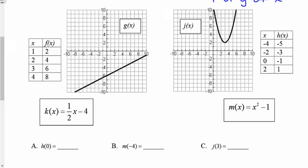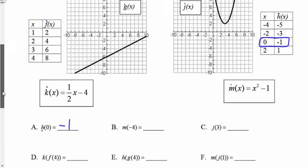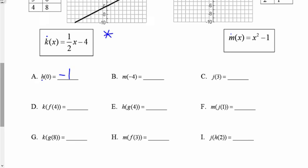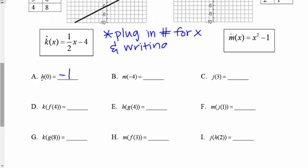It's asking me to do h of zero. I'm going to find the relation that's h — it's over here in that table. h of zero means I'm going to plug in zero for x and give the y value. My answer here is negative one. For every single one of these questions, a through i, you're going to plug in the numbers for x and write down the y value.